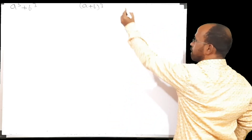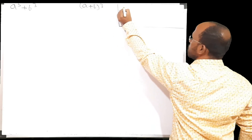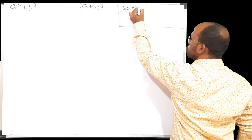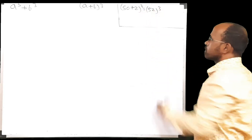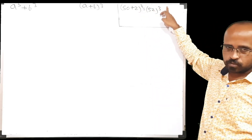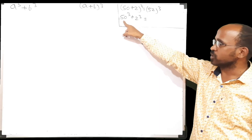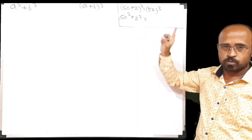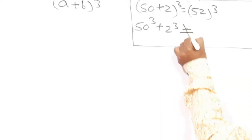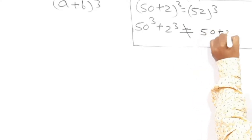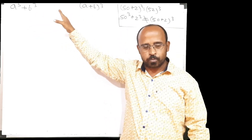For example, use your calculator. Use the calculator to find out the answer such as 50 plus 2, which is equal to 52 cube. Find out 52 cube by calculator and 50 cube plus 2 cube. You will find this cube first, then this cube and do the addition. You will easily come to know that 50 cube plus 2 cube is not equal to 50 plus 2 cube. So there is a difference between a cube plus b cube and a plus b bracket cube.